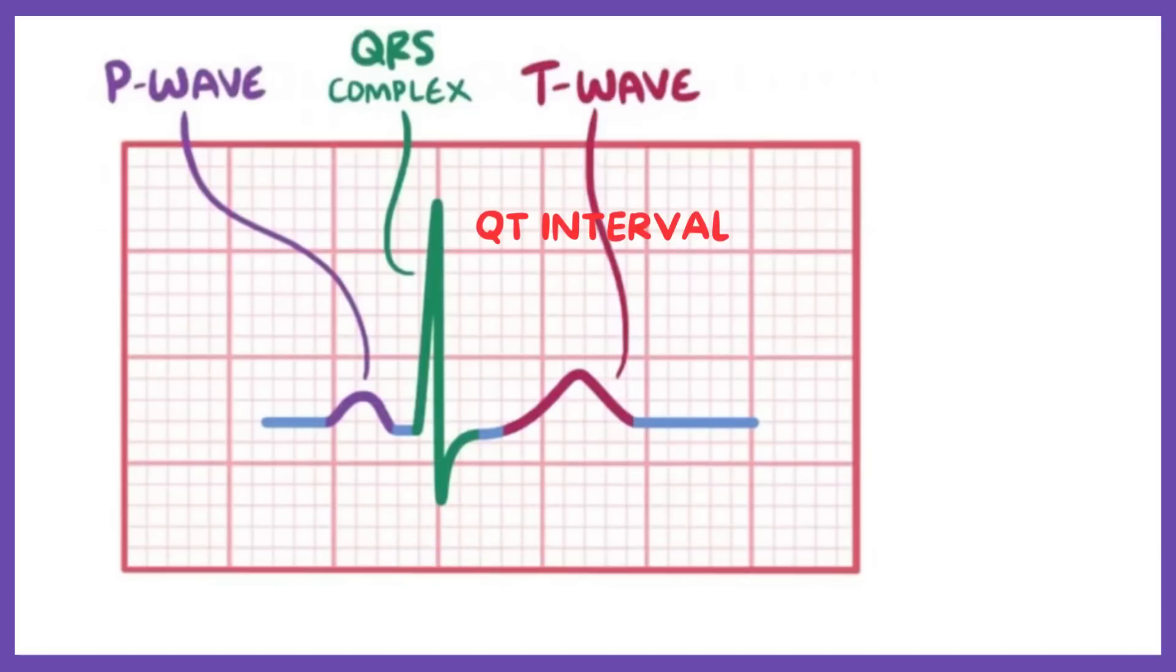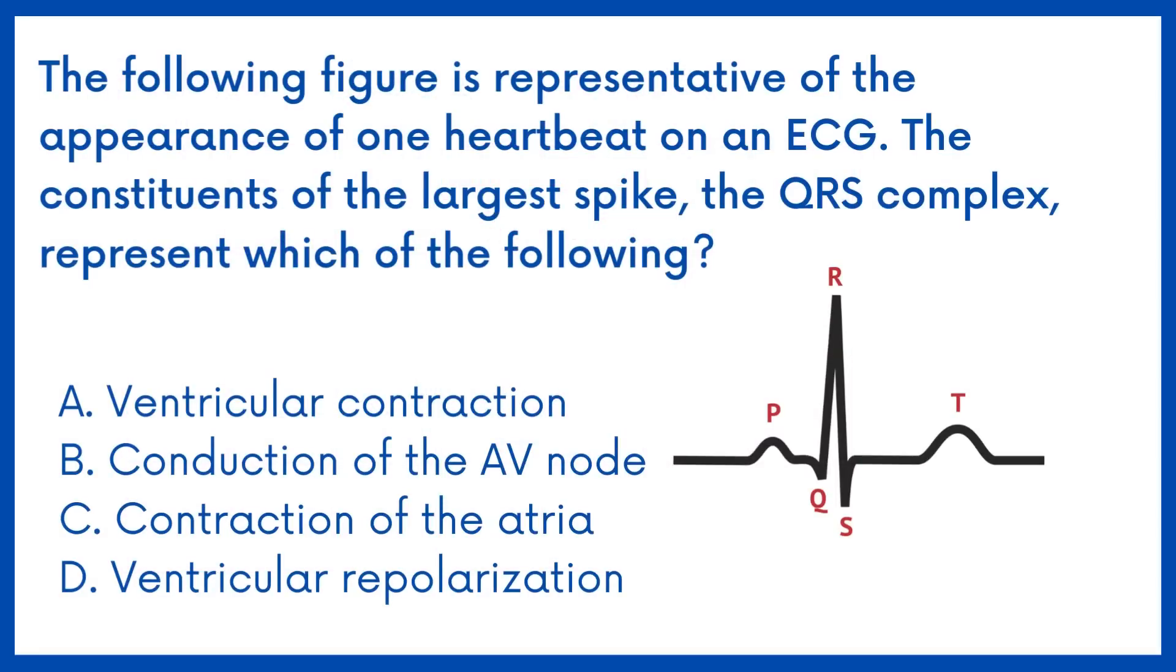The QT interval spans from the beginning of the QRS complex to the end of the T-wave. It represents the ventricular systole. Therefore the answer is Option A.